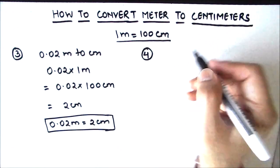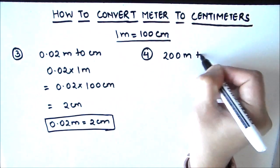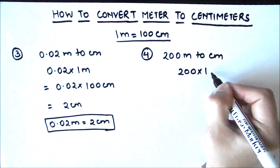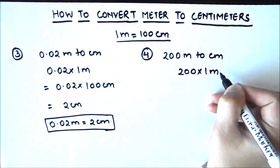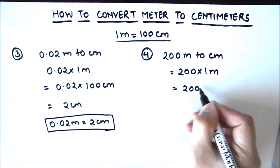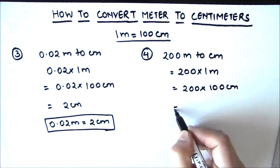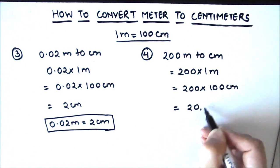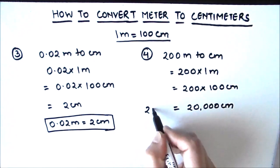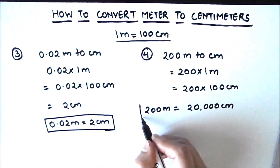In our last example we are going to convert 200 meters to centimeters. So 200 meters can be written as 200 times 1 meter, and in place of 1 meter we write 100 centimeters. That gives us 20,000 centimeters. So 200 meters is equal to 20,000 centimeters.